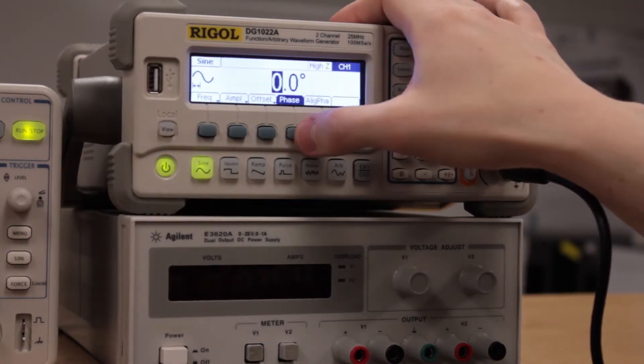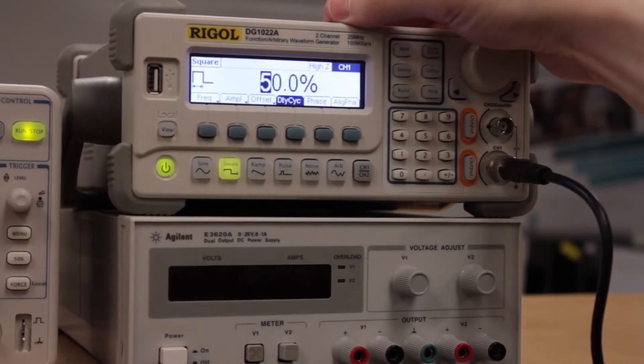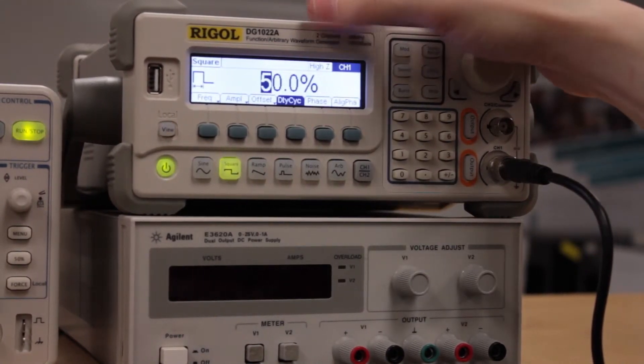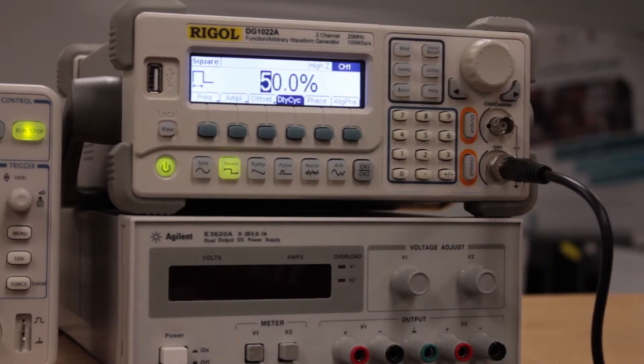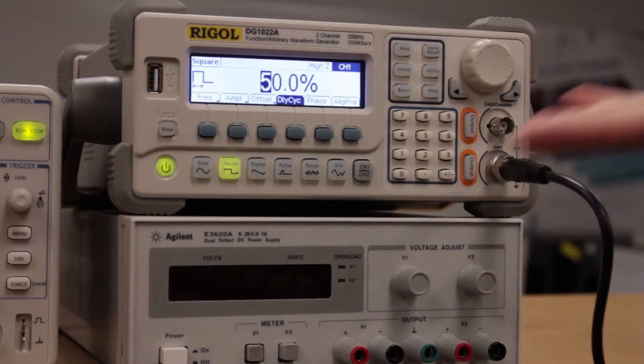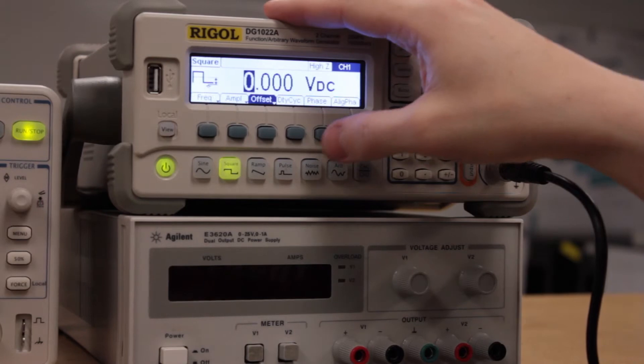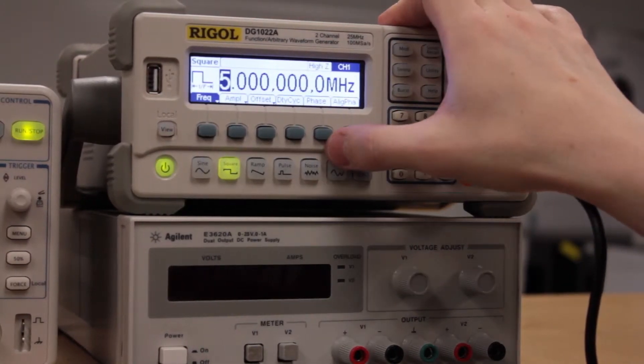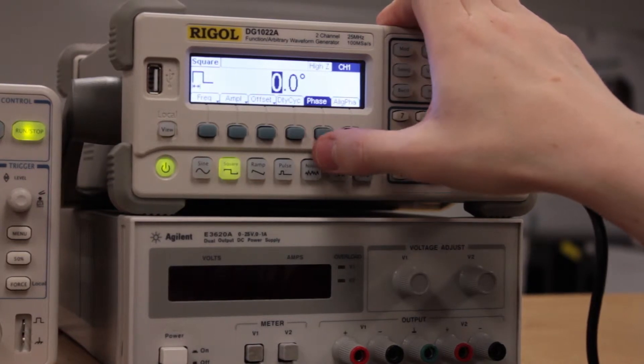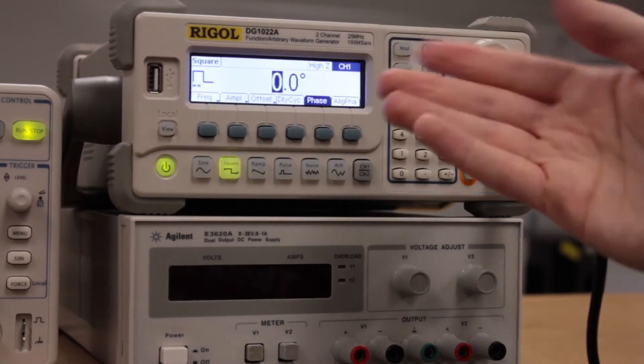If we go to square wave here, we can see duty cycle appears, and this basically is how much time it actually spends in the high value before going back down to the low value. Again, we can set a DC offset for the square wave, and amplitude and frequency are pretty much the same. The phase on the square wave is a little bit different, but you still won't use it.